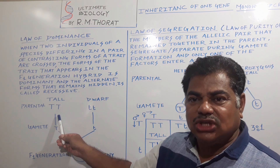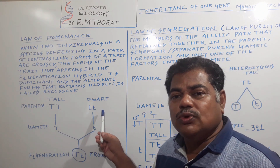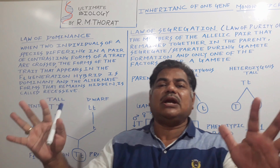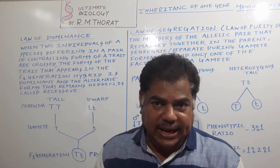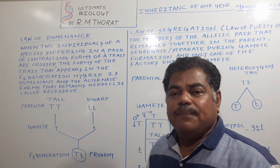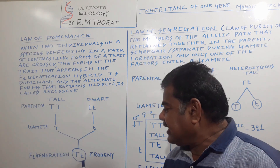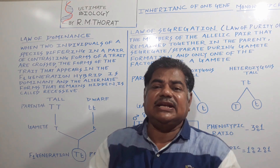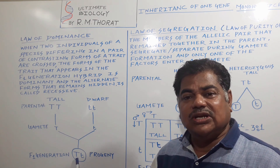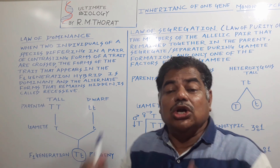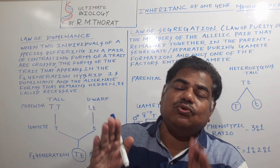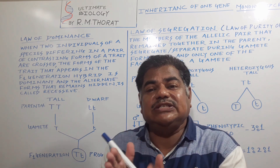When we cross homozygous tall with homozygous dwarf — that is a monohybrid cross — in the F1 generation all plants are tall; there is no intermediate plant, meaning characters do not blend. Tall is the dominant character and it expresses in F1. The dwarf character remains in the seed in a hidden, recessive form. One is tall — that is dominant — and the second character is recessive.